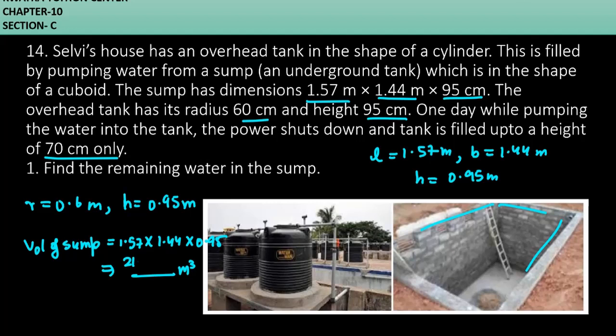Now you have to take height of the tank as 70 centimeter because they are saying that power shuts down and tank is filled up to a height of 70 centimeter only. So volume of tank will be equal to pi r squared h because the shape is cylindrical.